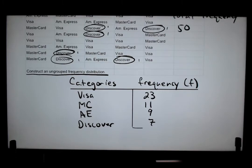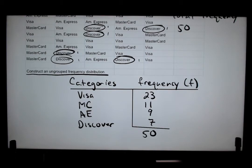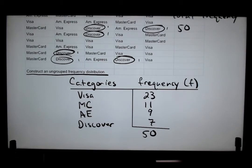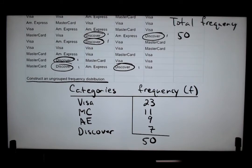Let me double check our total. 23 plus 11 is 34, plus 9 is 43, plus 7 is 50. Or you can do it the other way: 23 and 7 is 30, and 11 plus 9 is 20, and 20 and 30 is 50. So we've officially and correctly written down the frequency of each category — every number is accounted for and the total frequency matches the initial 50.